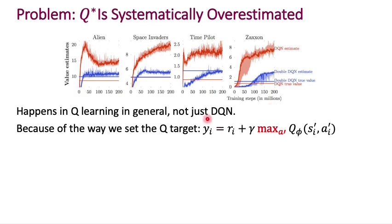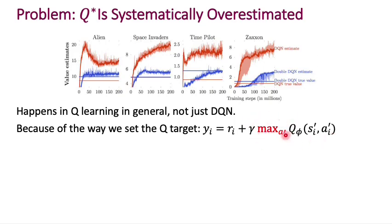This is not specific to DQN — this is true for all Q-learning. You have this bias towards overestimating Q-star. The reason it happens is because of the way we set the Q-target. The Q-target is yi equals ri, the current reward plus gamma times the maximum over actions of Q-phi for the next state and action. This maximum operator leads to a bias towards overestimation.